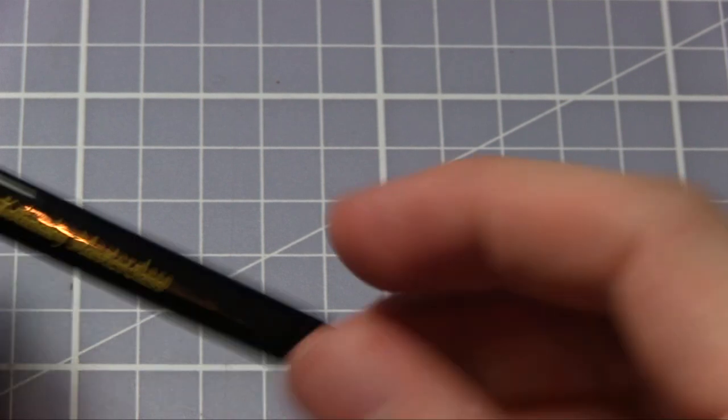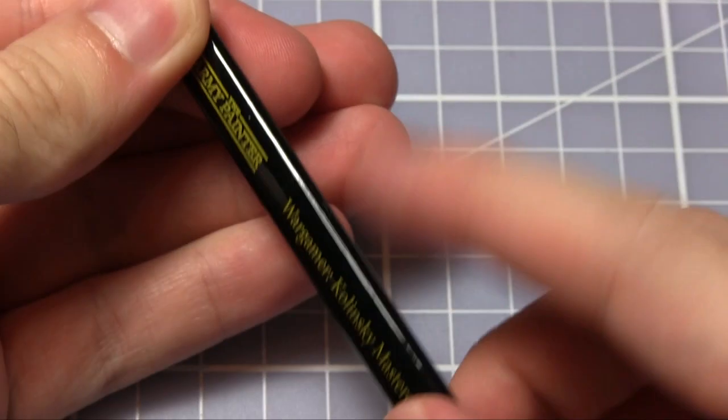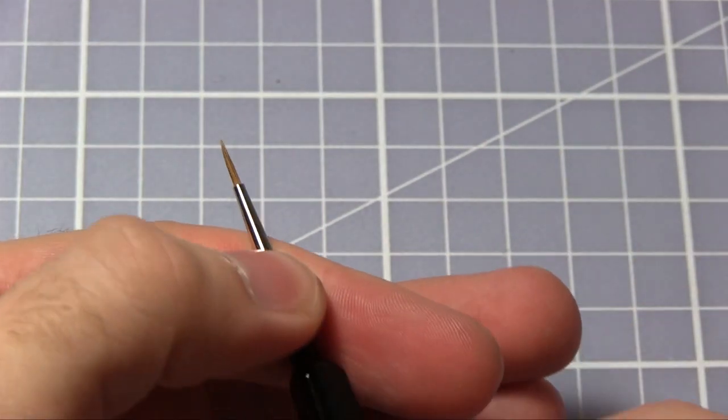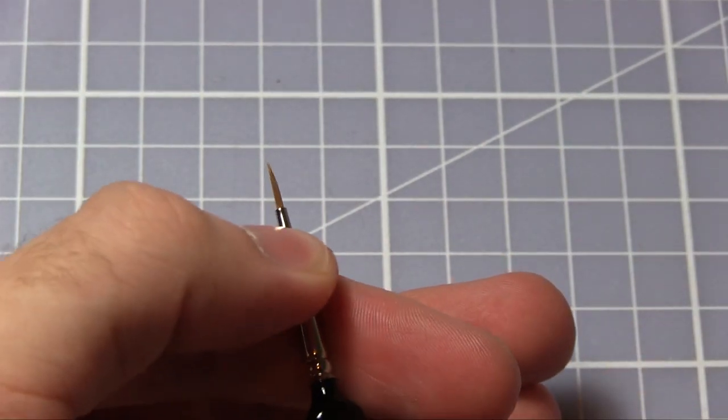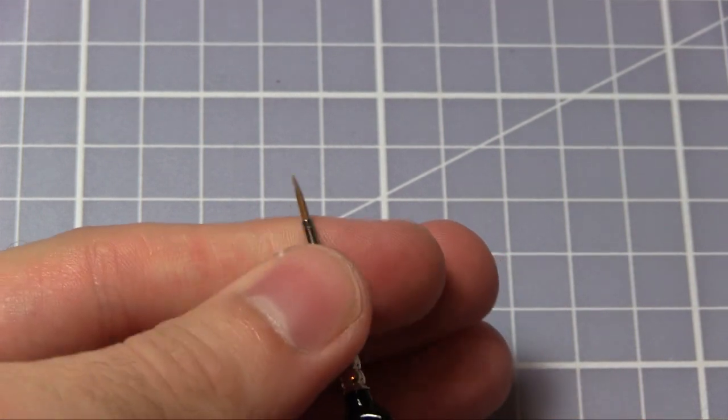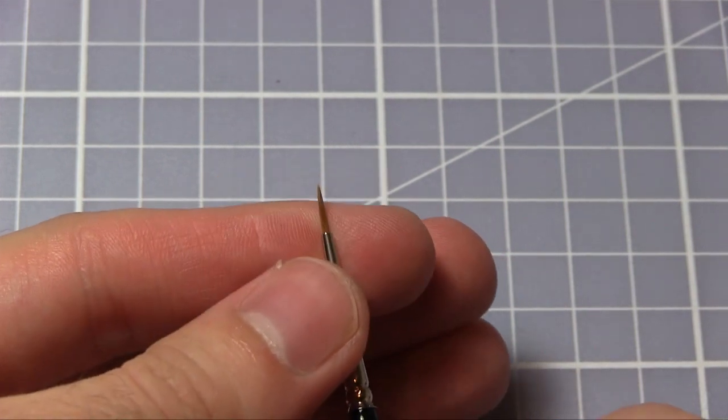The brushes we've been looking at so far have been a mixture of sable hair and synthetic bristles. But this leads us to the Kolinsky Masterclass Brush, which has a nice black handle there.